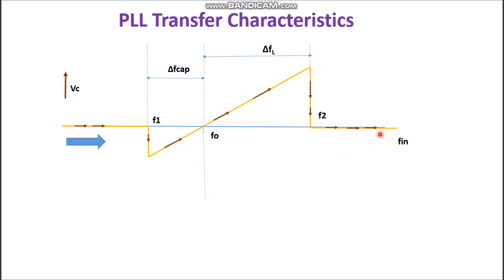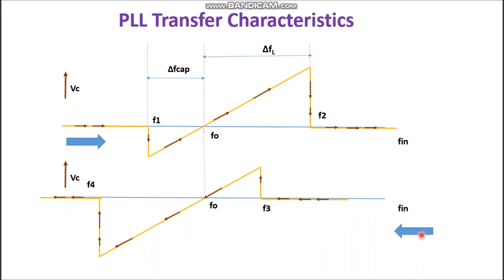Now let us say the frequency is decreasing. As expected, the change should occur at F2, but it does not occur because there is hysteresis. When we are decreasing the frequency, the VCO is running at the free running frequency. At a certain frequency Ft, there will suddenly be a positive jump and an error voltage is generated — so it has now come into the capture range. If the frequency decreases further, this error voltage decreases, and at F4 both frequencies will be equal, so the error voltage is zero.